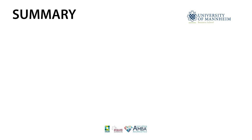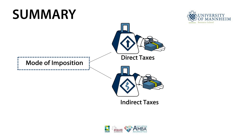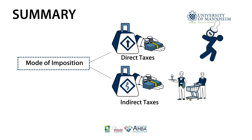To summarize, the most important classification of taxes relies on the mode of imposition and distinguishes between direct and indirect taxes. Direct taxes are paid directly by the legal or natural person they are levied upon. Contrarily, indirect taxes are passed on from the payer to the end consumer, making consumption more expensive.